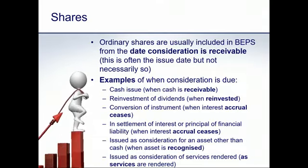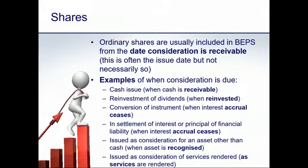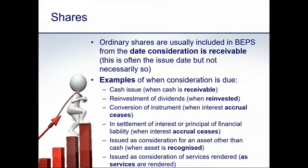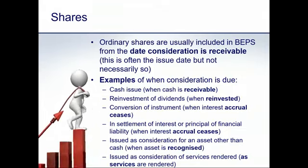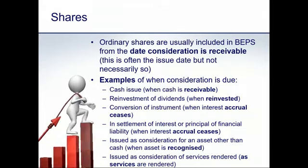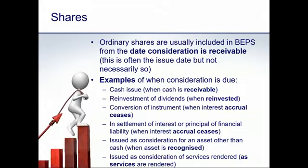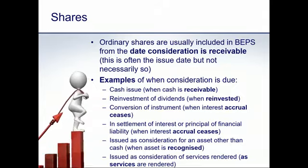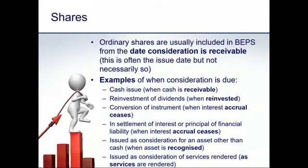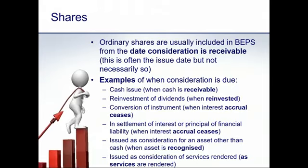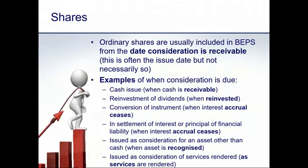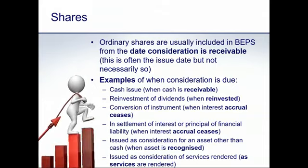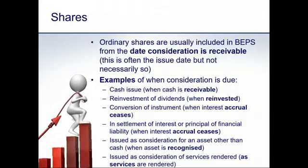An important consequence is that the issued shares an entity has at year-end may not correspond with the number used in basic EPS, because we use various trigger dates that may not coincide with the actual physical issuance of shares — which may be delayed or may predate the recognition criteria in IAS 33. The date of issue is often relevant, especially for cash issues, but it's not always the trigger date. For each type of share issue transaction, there is a specified trigger.